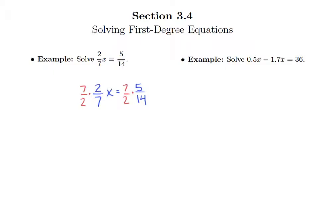Alright, so on the left side everything cancels out, leaving us with just one x. On the right side, seven divided by seven is one, fourteen divided by seven is two. So we have x on the left side equals one times five is five, two times two is four. So x equals five fourths is our solution to the first example.